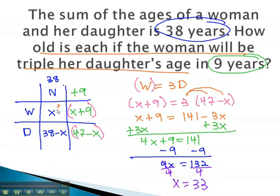x, or the woman, is 33. The daughter is 38 minus 33, or 5. The woman is 33. The daughter is 5.